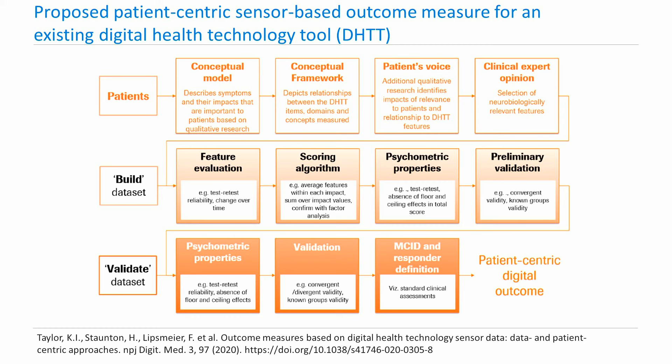This process is repeated for other activities of daily living limitations as well. These conceptual frameworks are then reviewed by clinical experts to assess if the mapping is clinically robust. The next step is the psychometric evaluation using independent build and validation data sets. With build data sets, the feature evaluation is carried out which encompasses test-retest reliability, change over time, meaningful progression, and disease progression. Only the reliable features are carried forward to the next stage. In the next stage, a SCORI algorithm is created and assessed for psychometric properties. After initial validation with build data set, an independent validation data set is used to assess the robustness of psychometric properties. Subsequently, minimally clinically important difference estimates and responder definitions are generated.